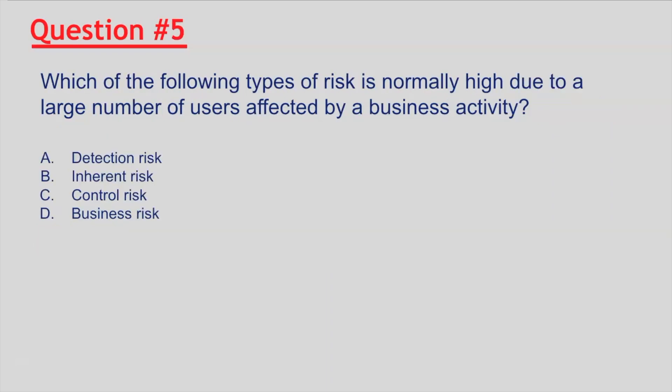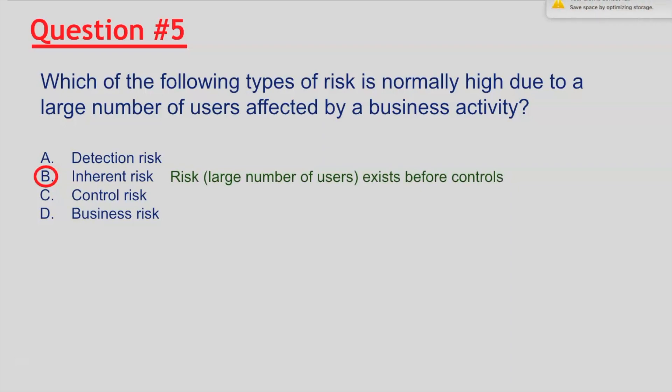Question number five: which of the following types of risk is normally high due to a large number of users affected by a business activity? If you selected B, inherent risk, you are correct. This is because the risk — the large number of users — exists before controls.